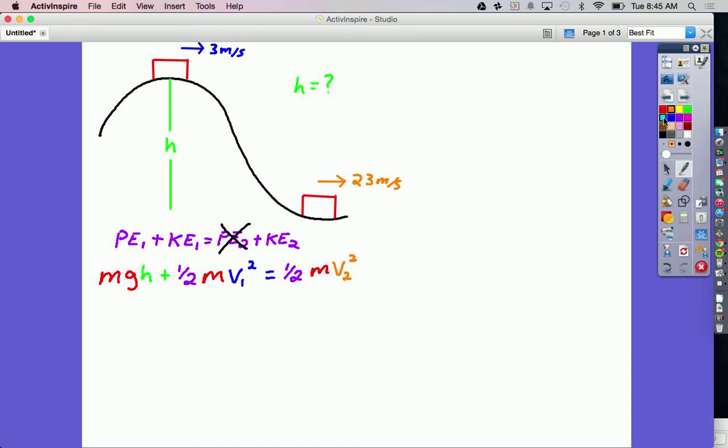What we have in each term you might notice is an m, so if I divide both sides by m, my m terms cancel out. So it does not matter what the mass of the roller coaster is, that's just going to go away. And when I rewrite, I get gh plus 1/2 v1 squared equals 1/2 v2 squared.